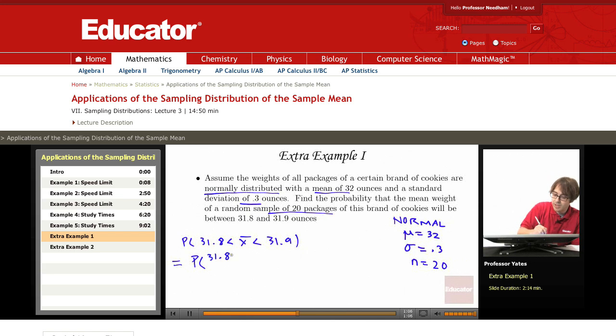So I'm taking 31.8 minus 32 divided by 0.3 over the square root of 20, and then we have 31.9 minus 32 over 0.3 over the square root of 20.